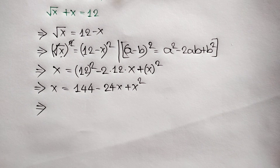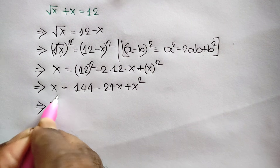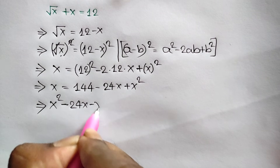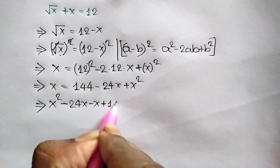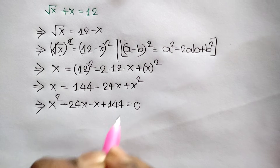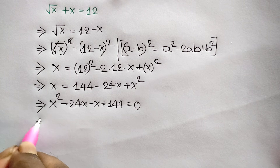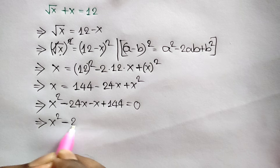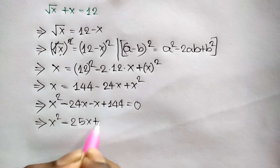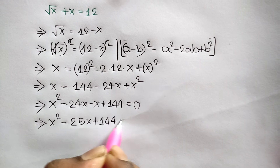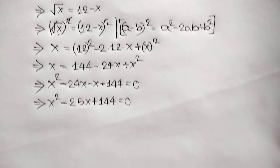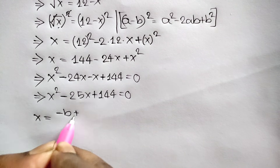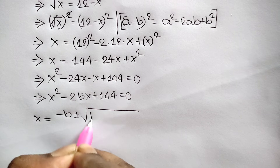Now taking this x to the right side, we will get x squared minus 24x minus x plus 144 is equal to 0. That gives us x squared minus 25x plus 144 is equal to 0. Now here we can use the quadratic formula.